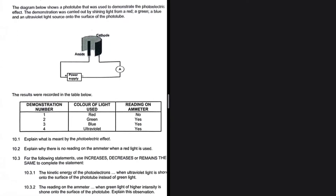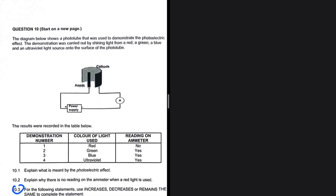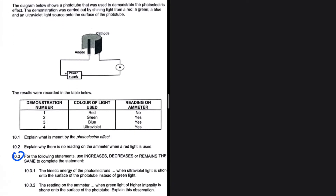10.3 is such a beautiful equation — let me show you why. For 10.1, we're supposed to explain what is meant by the photoelectric effect. That is a process whereby electrons are ejected from a metal surface when light of a suitable frequency is incident on the metal surface.